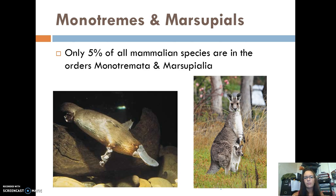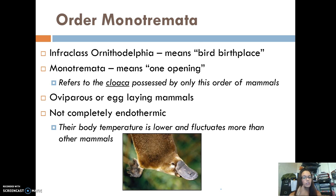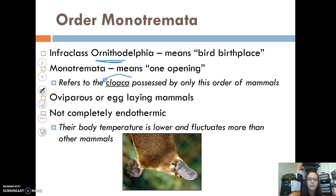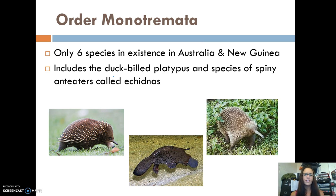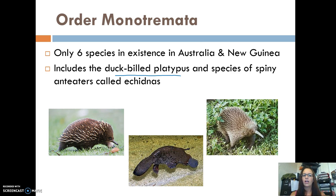There are also monotremes and marsupials, and only five percent of mammalian species are in these two orders. First, order Monotremata — infraclass Ornithodelphia, which means 'bird birthplace.' They have one opening, also known as a cloaca, just like reptiles, birds, and amphibians, because these mammals actually lay eggs. They're also not completely endothermic; their body temperature is lower and fluctuates more than other mammals. There are only six species, all in Australia and New Guinea. The most well-known is the duck-billed platypus, but there are also spiny anteaters called echidnas.